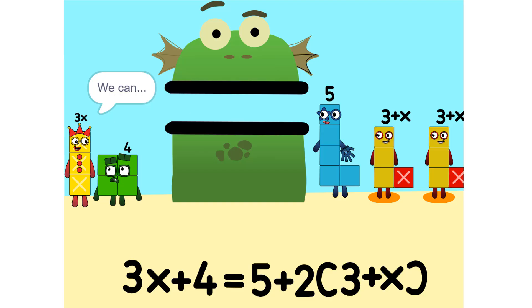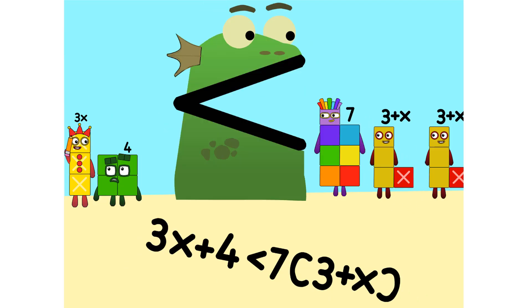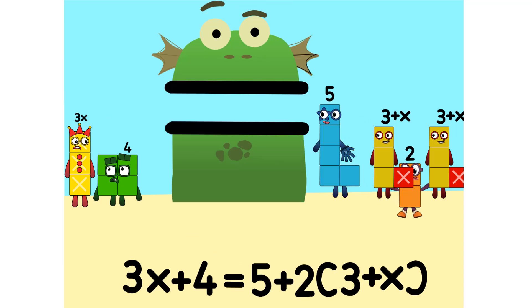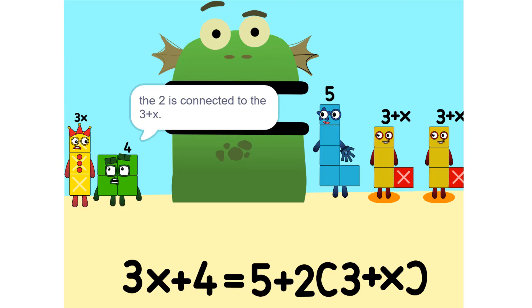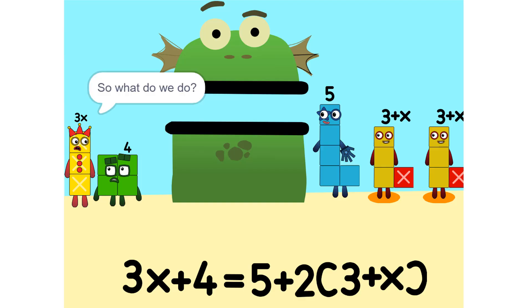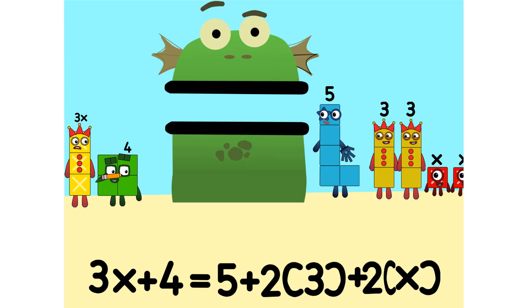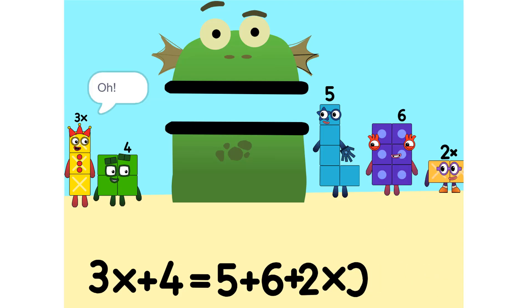I see something. We can add these. Why did that happen? Because the 2 is connected to the 3 plus X. Oh, so? It's like adding apples and oranges. You can. So what do we do? Okay. See the 2 times 3 plus X? That's the same as 2 times 3 plus 2 times X. Which is 6 plus 2X. Oh.